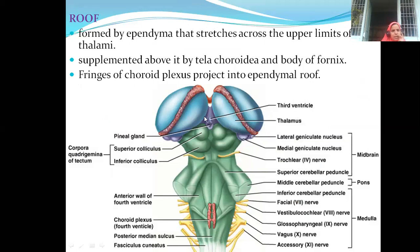Between the two thalami, this violet area is the third ventricle, supplemented above by the capillary network — the tela choroidea. Now because you have seen the picture of the fornix, you will be able to correlate. The body of fornix is found at this point.